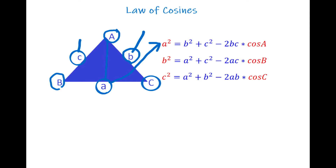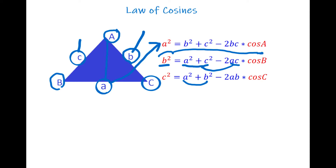We can memorize it this way: for b squared, the other two sides are a squared plus c squared, minus two times those same sides a and c, times cosine B. As a last formula, c squared equals a squared plus b squared — the other two sides — minus two times a times b times cosine C.